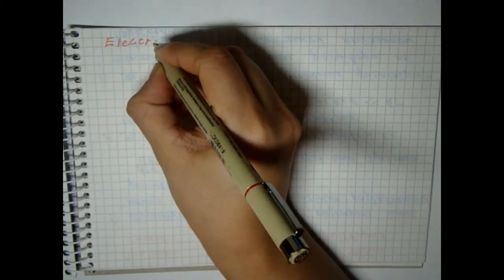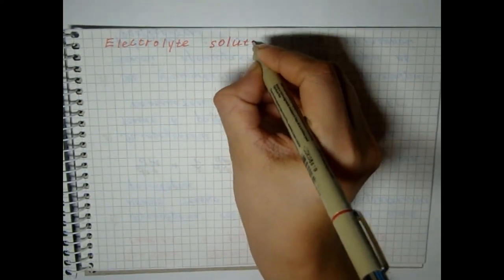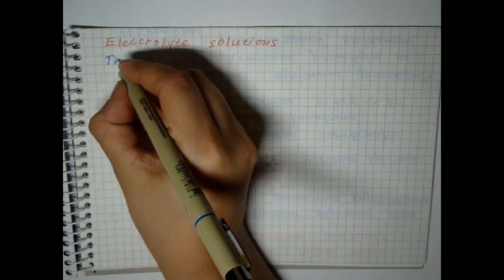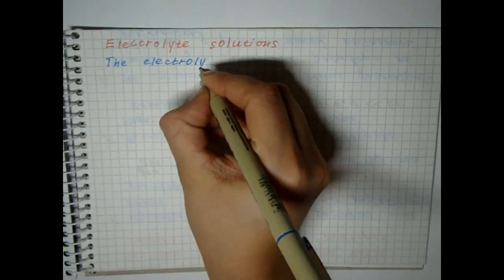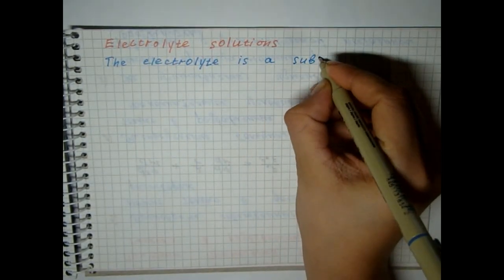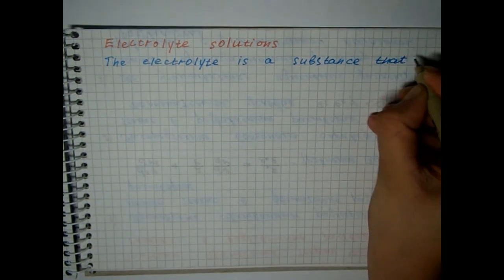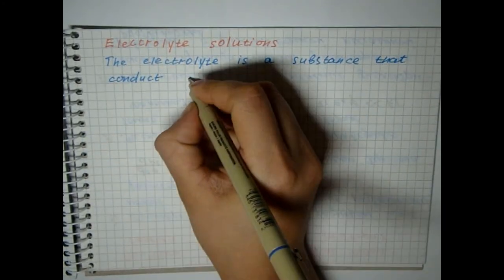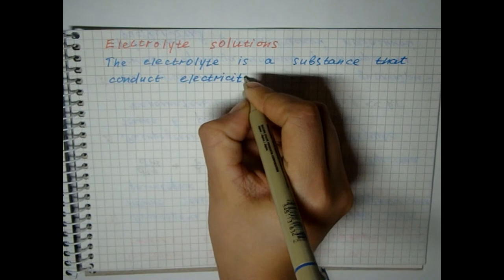Today we begin the study of electrolytes. The electrolyte is a substance that conducts electricity by dissociation into ions. This can occur both in solution and in melts. But today we will focus on electrolyte solutions.